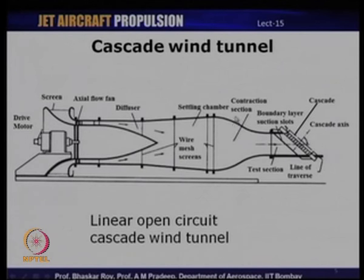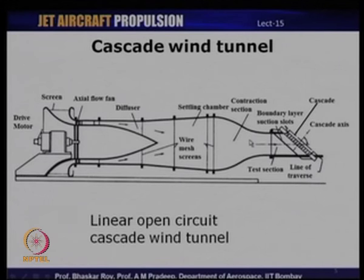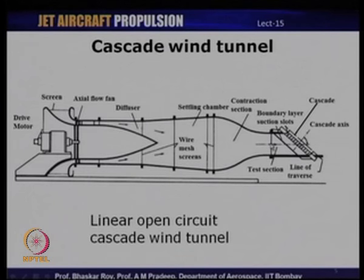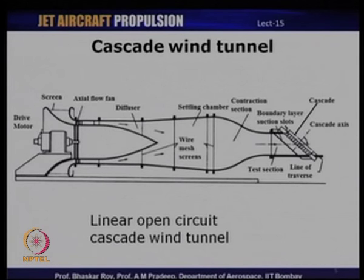At the end of the settling chamber we have a contraction — like a subsonic nozzle. There is a reduction in area which means that, because it is a subsonic flow, as it passes through the contraction section the flow will accelerate. As it accelerates, turbulence also reduces. At the exit of this contraction — which is where the test section begins — we have a relatively smooth flow with very low turbulence and a uniform velocity profile entering the cascade. A very uniform velocity profile is important because we need a profile which is known a priori.